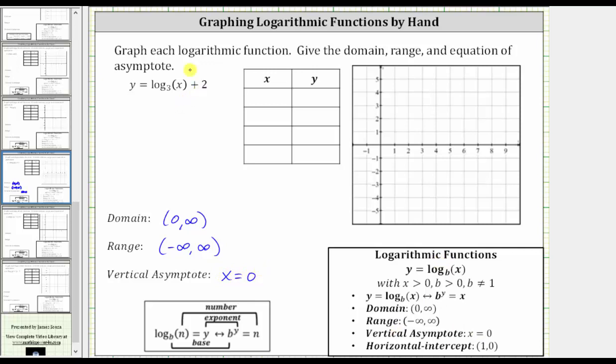Now to graph this by hand, we will first isolate the logarithm and then write the equivalent exponential equation. We will use the exponential equation to complete the table of values. Once we have the table of values, we'll use the ordered pairs to graph the function.